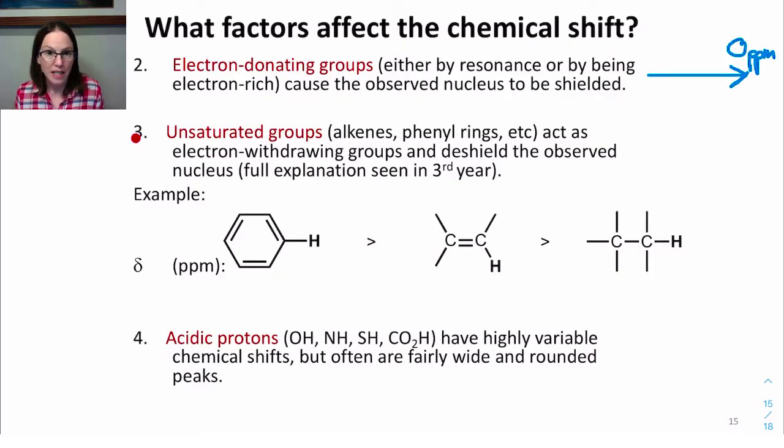So unsaturated groups like alkenes and phenyl rings, they act as strong electron-withdrawing groups. They deshield the observed nucleus. And you'd see a full explanation of why that is and what causes the phenomenon that causes that effect in a third-year course. So for example, a phenyl proton will appear at around 7. An alkene proton appears at around 5. And a proton in a completely saturated system has a chemical shift at about 1 ppm, just as a basis for comparison.